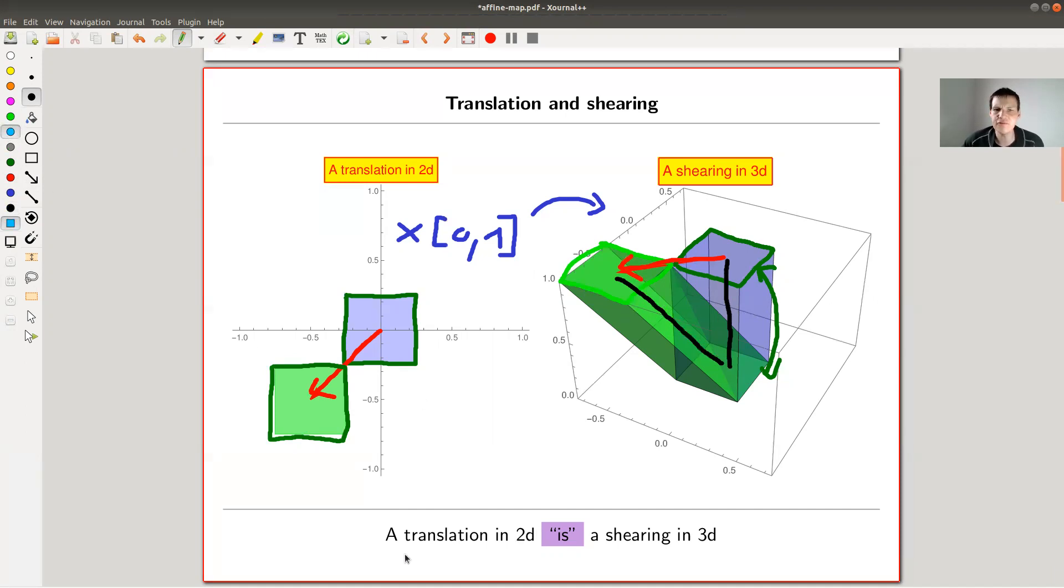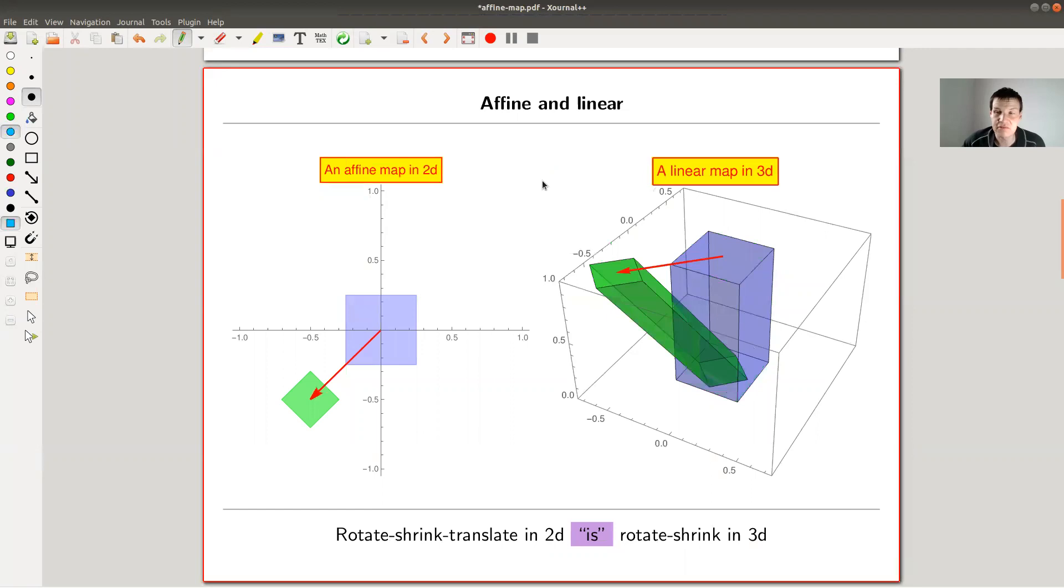That's a fun observation. So translations in 2D actually are shearing in 3D. That's fun. So we did something affine which is not related a priori to anything linear, but it actually is linear in one dimension higher. So that's a funny observation. Let's do another example.